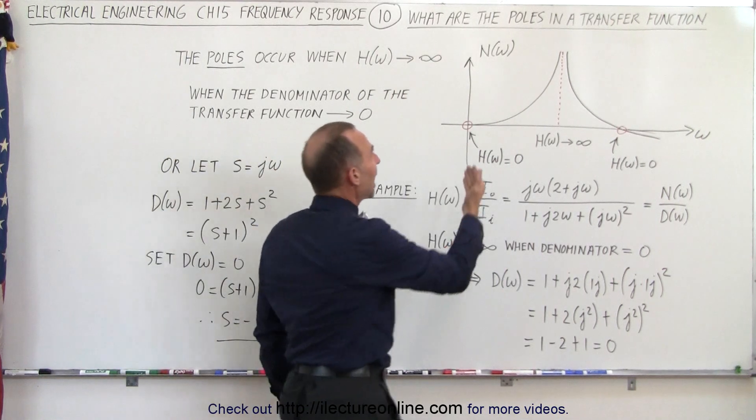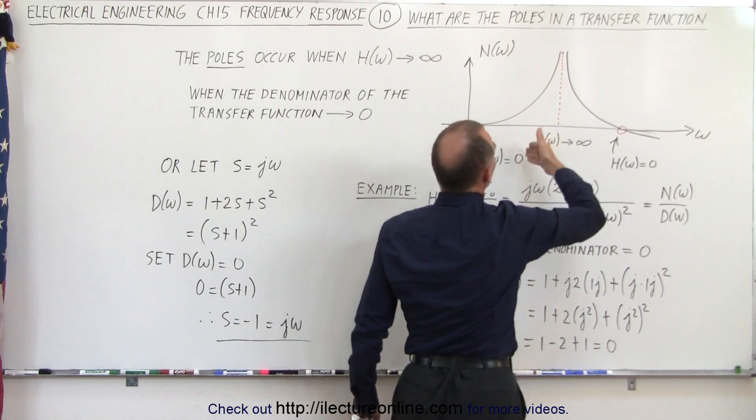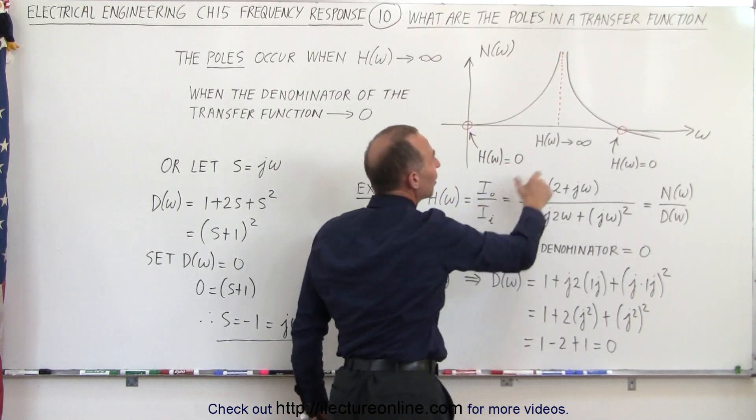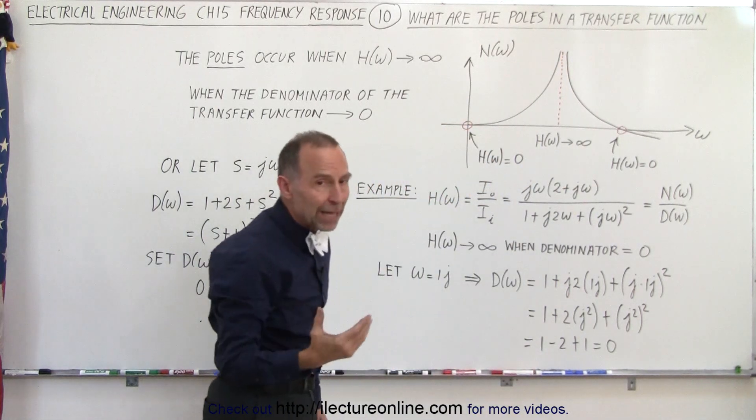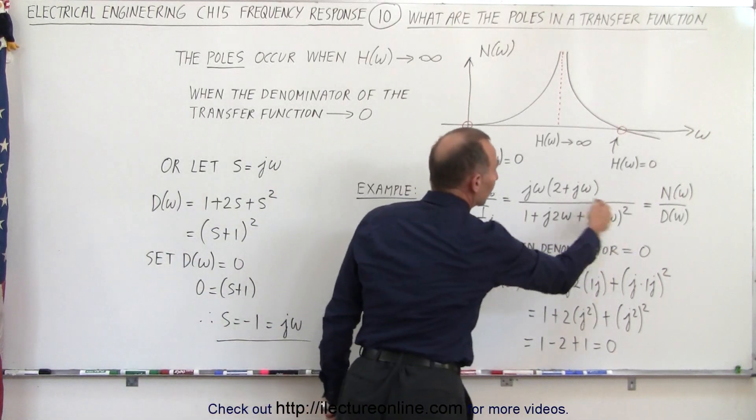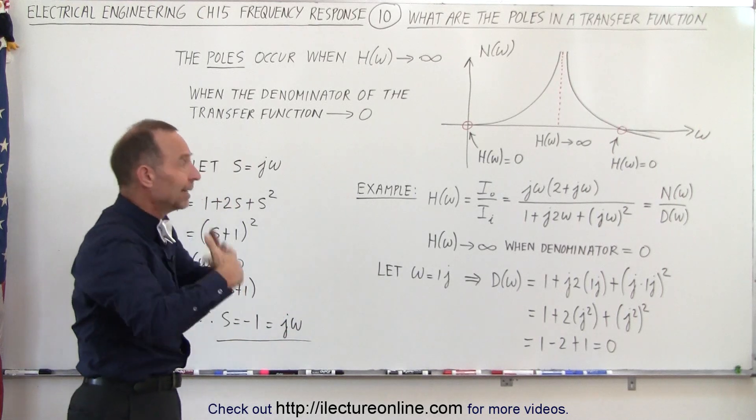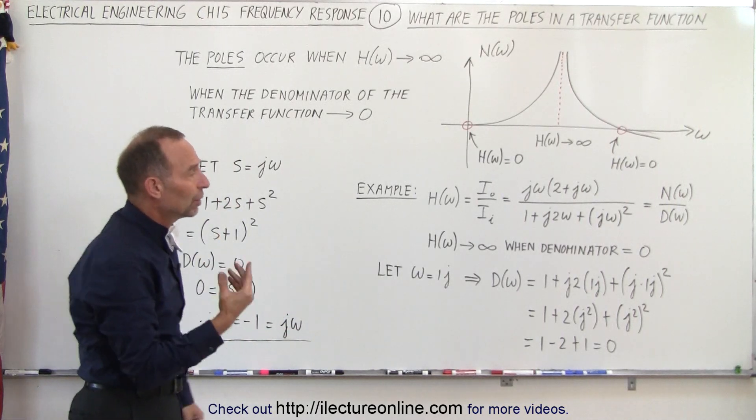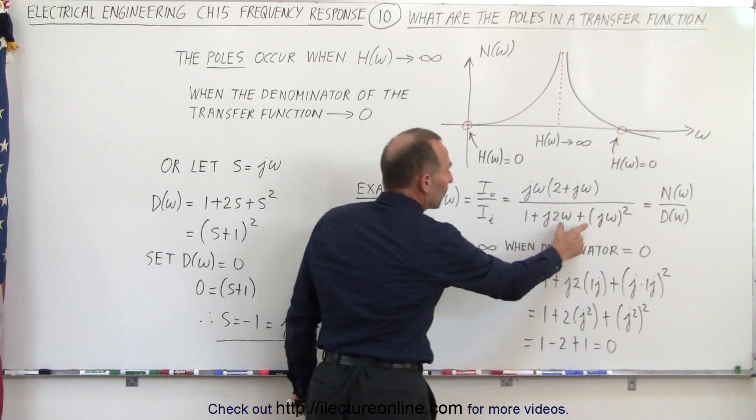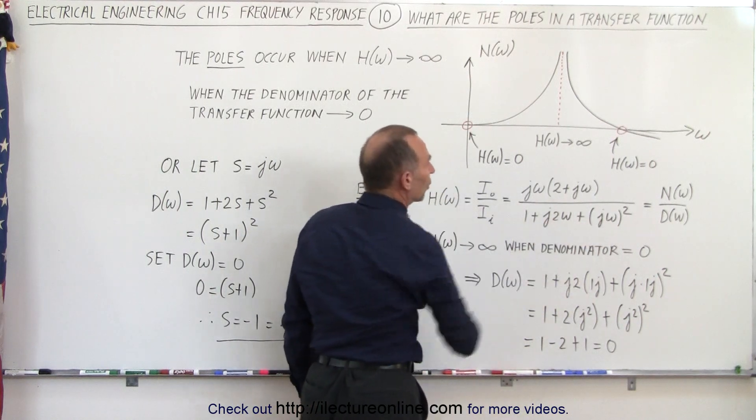But sometimes we have the transfer function go to infinity for a particular value of omega. Well that happens when the denominator becomes zero, because of course whenever we divide by zero we get an infinite value. And so what we then do is find the values of omega that will make the denominator go to zero.